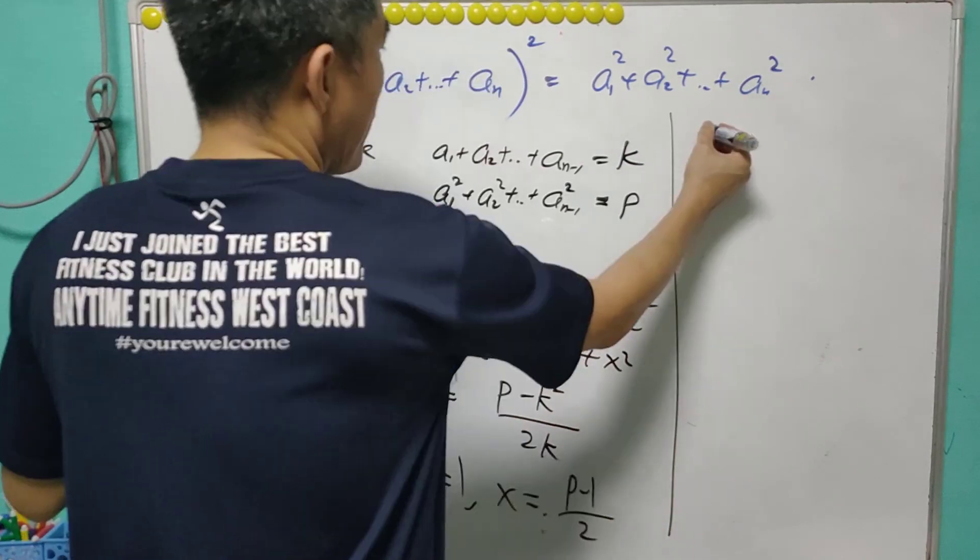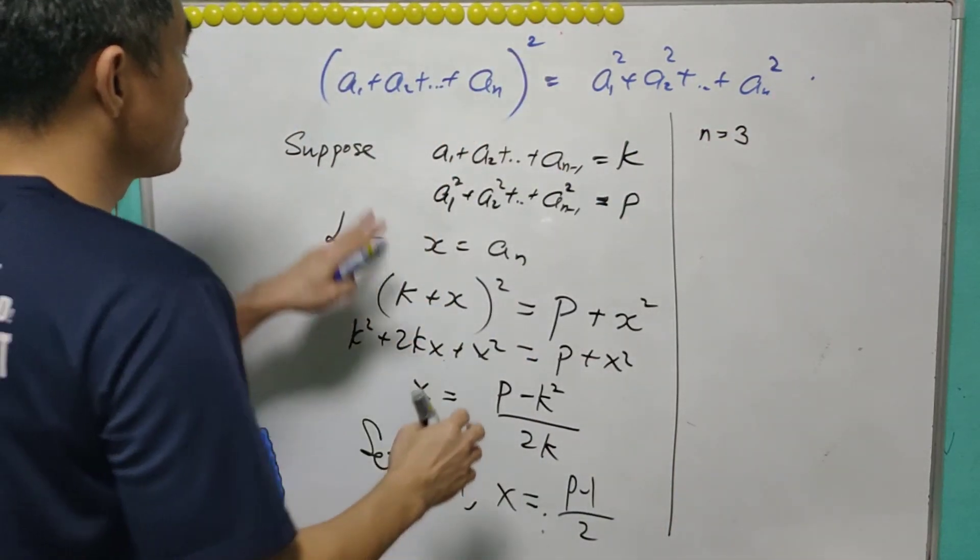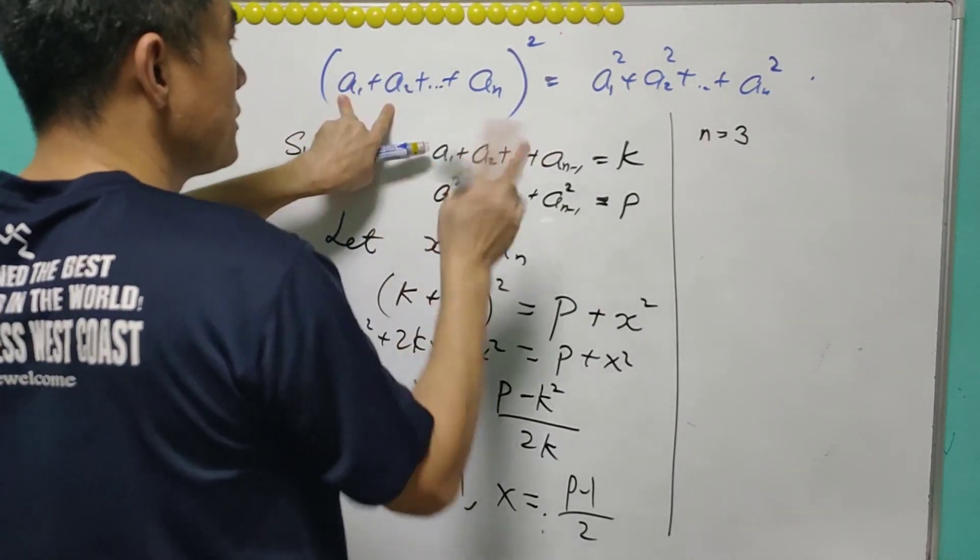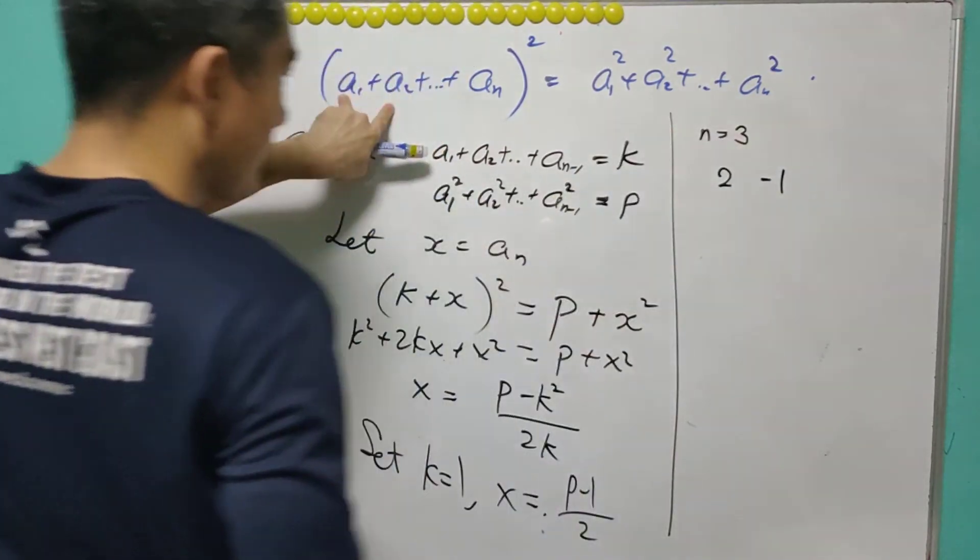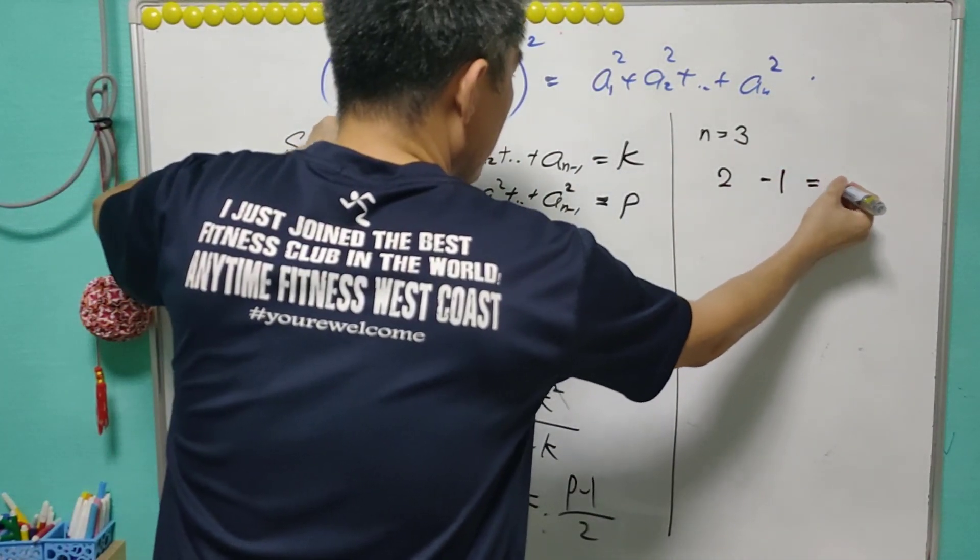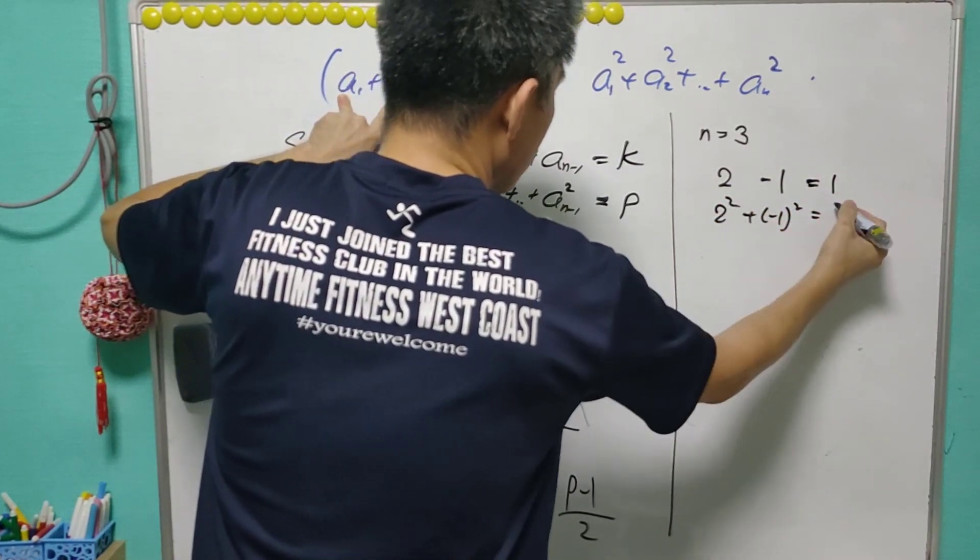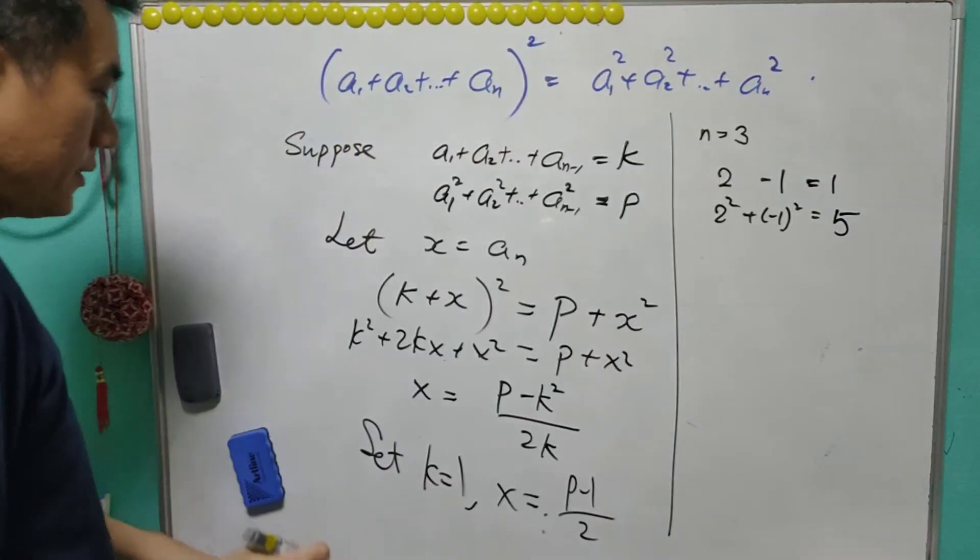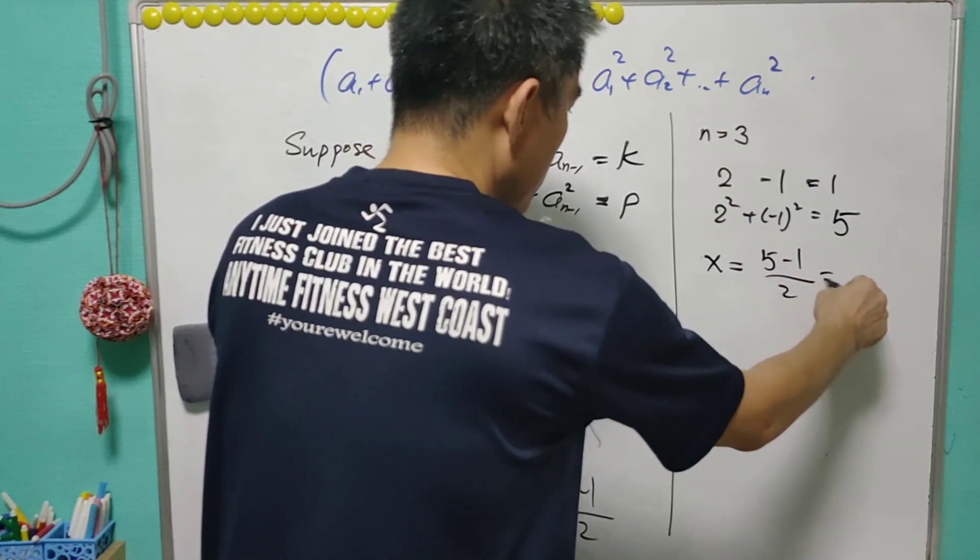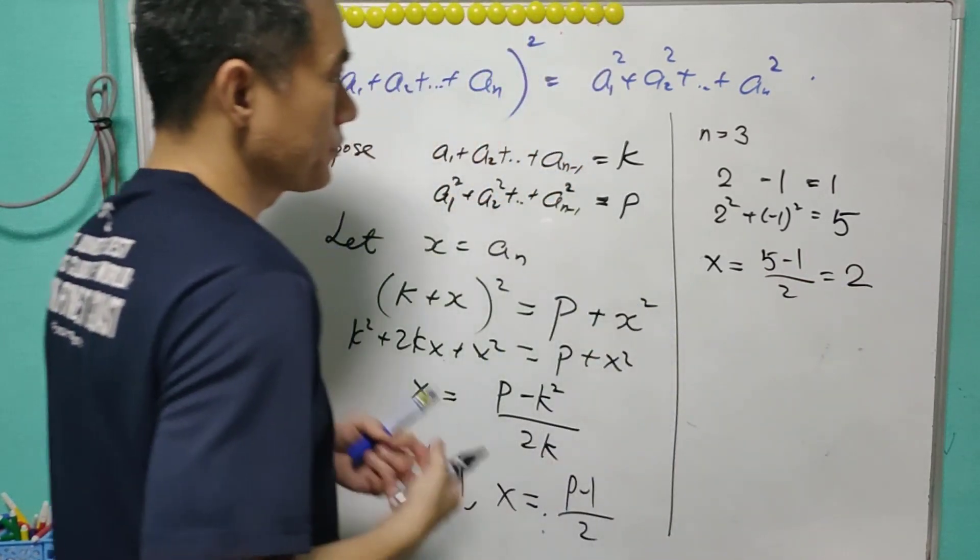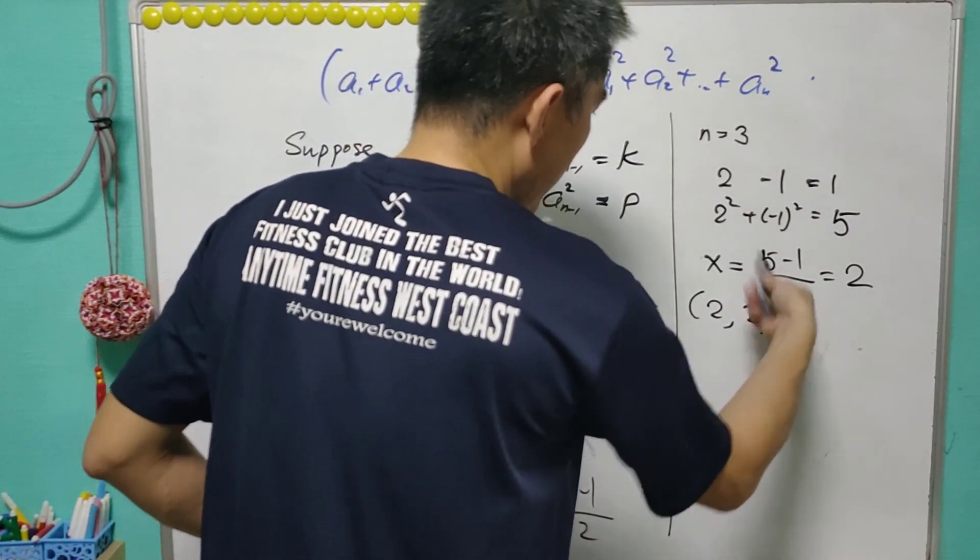Example that we have just now, n is equal to 3. So we have 3 terms, k equals 1. So the sum of the 2 differs by 1. So I start with 2 and negative 1. 2 and negative 1, so it will be equal to 1. And 2 square plus negative 1 square, it is equal to 5. Then it suggests that the next one will equal to p minus 1 over 2. That is equal to 2. That's right, we will have 2, 2, negative 1 as our answer.